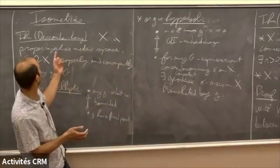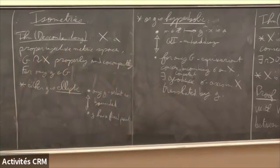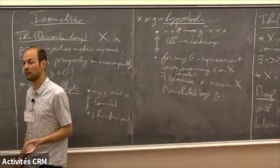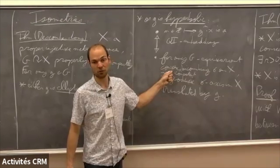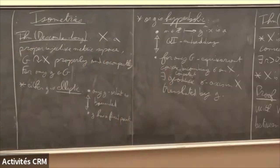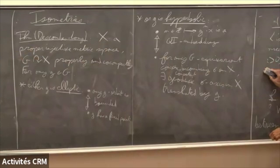One nice consequence is that in particular you don't have distortion in injective metric spaces. If you have a group which acts properly co-compactly on an injective metric space, then every element is either of finite order or is undistorted. So you don't have Baumslag-Solitar subgroups inside groups acting on injective spaces.